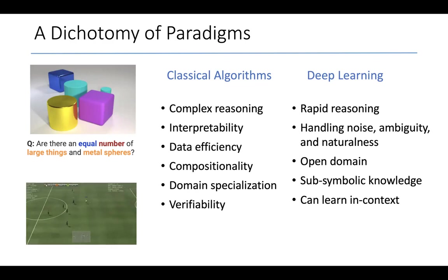They can even use sub-symbolic knowledge, for example, when I use the word Richard, one can associate a likely gender with the name. And finally, they can learn in context, by which I mean paradigms like few-shot learning that you're seeing increasingly in the context of large language models.